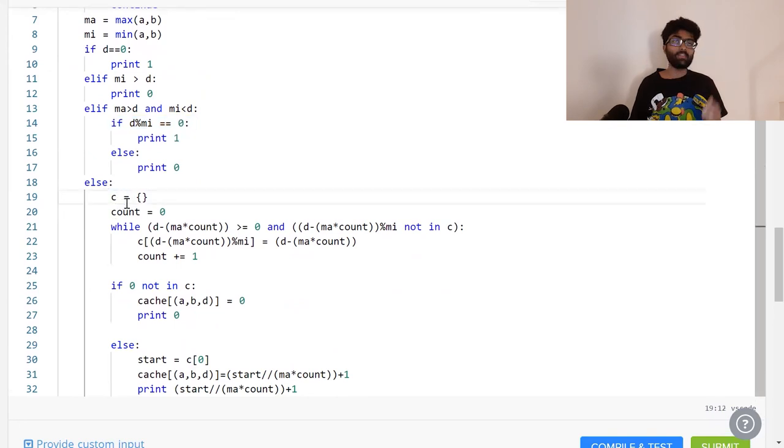The last condition is if they're both less than d. Count is going to be used to find the length of the cycle. The moment we encounter an element more than once, this while loop will break out. Now, c of zero is the only important value. That's because that gives us the starting point. All of the other values are irrelevant. Once this while loop is done, if zero is not there in c, that means we've encountered a complete cycle and no element was divisible by the smaller element. That's why we simply print zero. If that's not true, then we have encountered a zero. That zero will be our starting position, and our result will simply be starting position divided by the bigger element times the cycle length plus one.